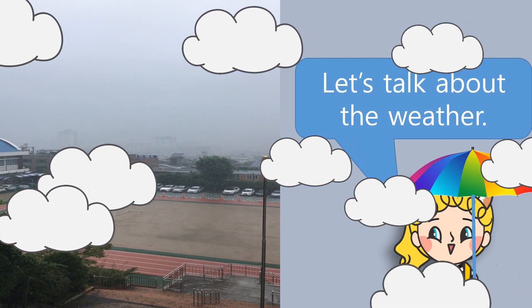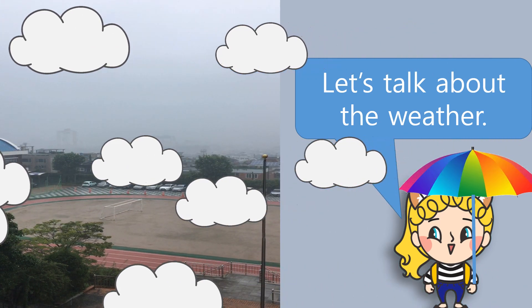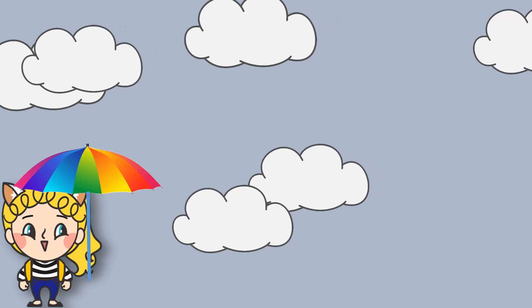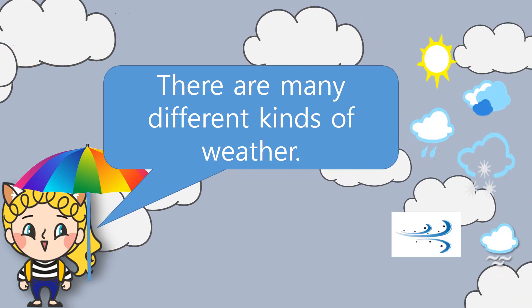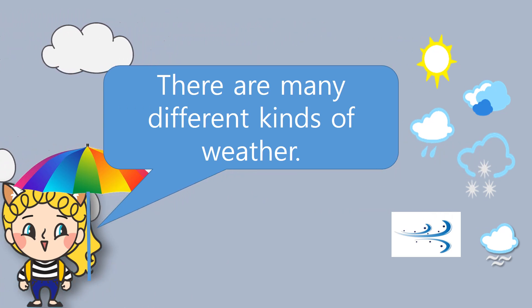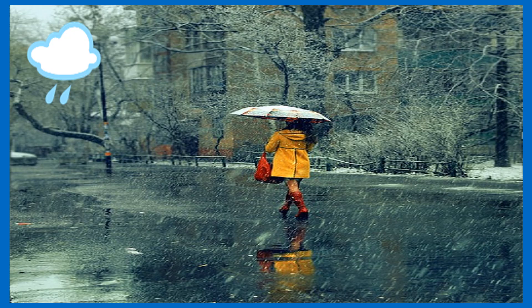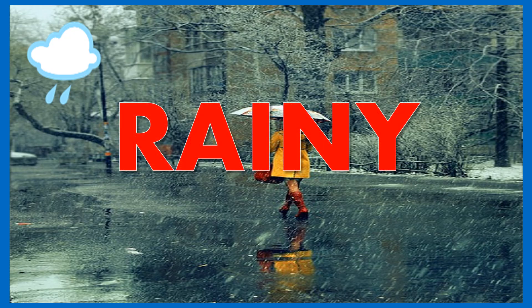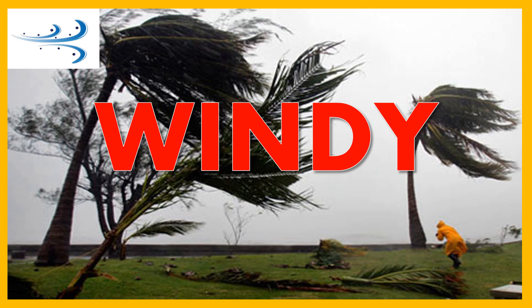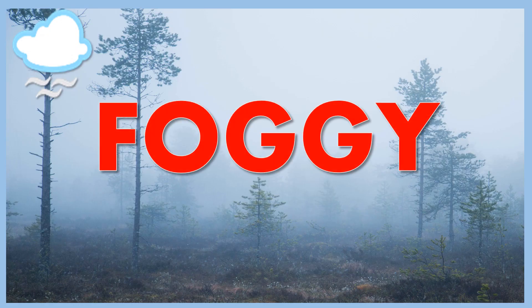Let's talk about the weather. There are many different kinds of weather. Let's review the different kinds. We have sunny, rainy, cloudy, snowy, windy, foggy, and stormy.